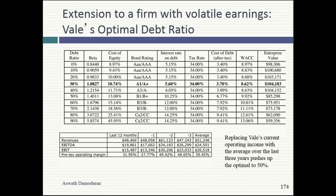When I looked at Vale's optimal debt ratio and plugged in the numbers, the optimal I got was 30%. Vale was already at 39% debt. This was with 2013 income. I actually talked to the CFO of Vale right after. I said you guys seem a little over-levered. His response: iron ore prices are down and they're going to rebound. Rebound to what — a 10-year average? The 10-year average was actually much higher, and if you use it, you come up with an optimal of 50%.